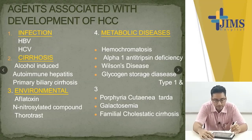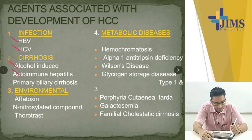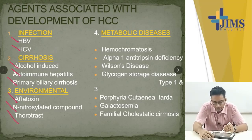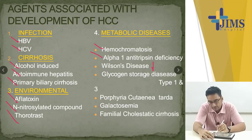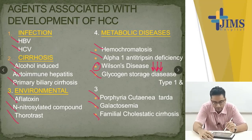Agents associated with HCC include HBV, HCV, alcohol-induced cirrhosis, autoimmune hepatitis, primary biliary cirrhosis, aflatoxin and nitrosamines, thorotrast, and metabolic diseases like hemochromatosis and alpha-1 antitrypsin deficiency. Wilson's disease has a very low association and usually does not cause HCC.